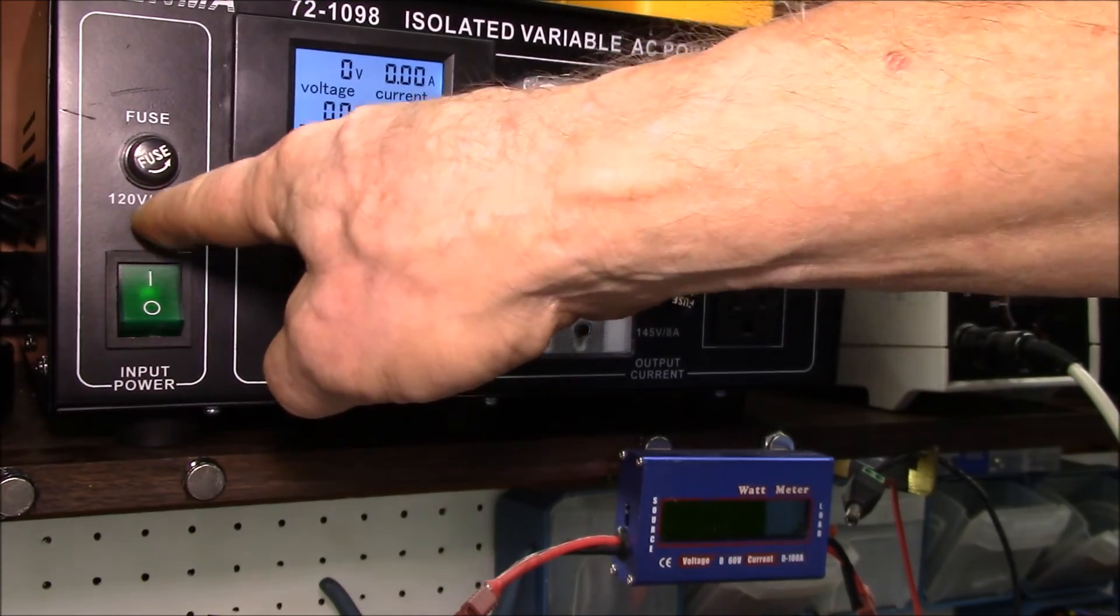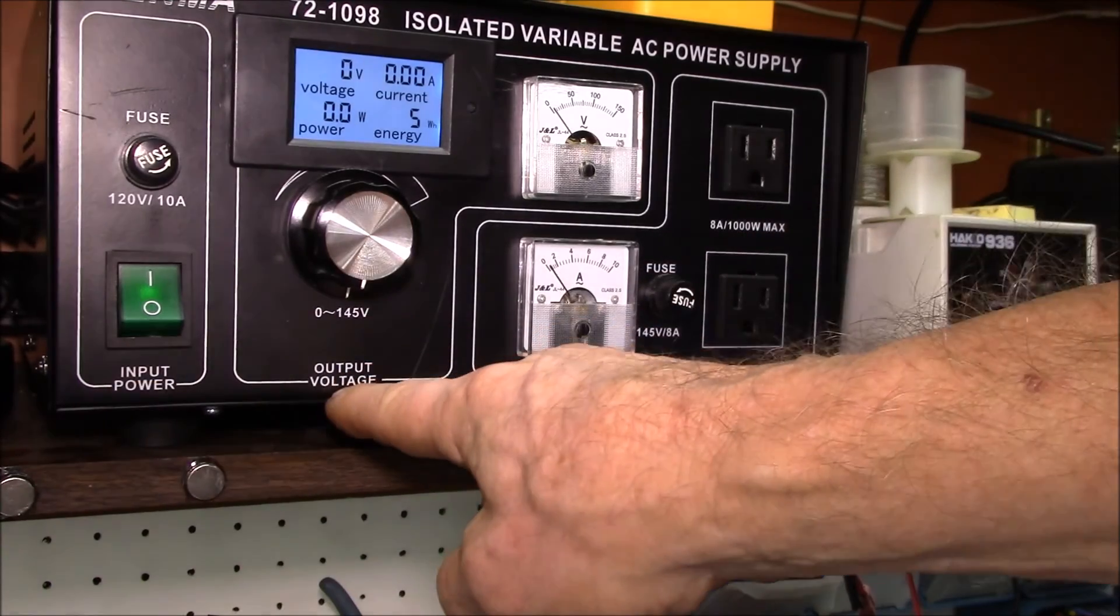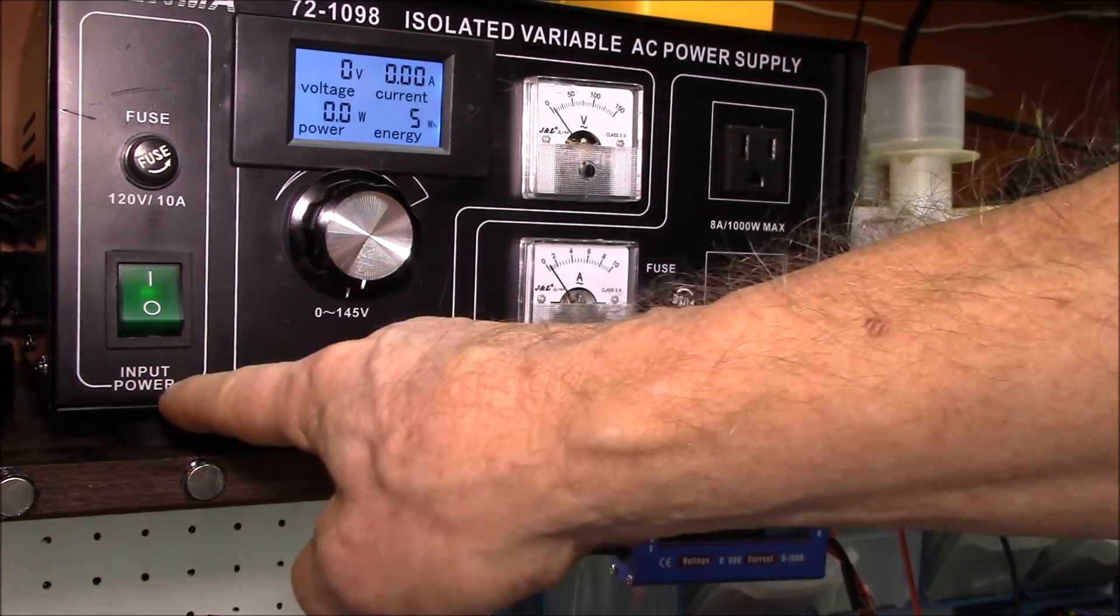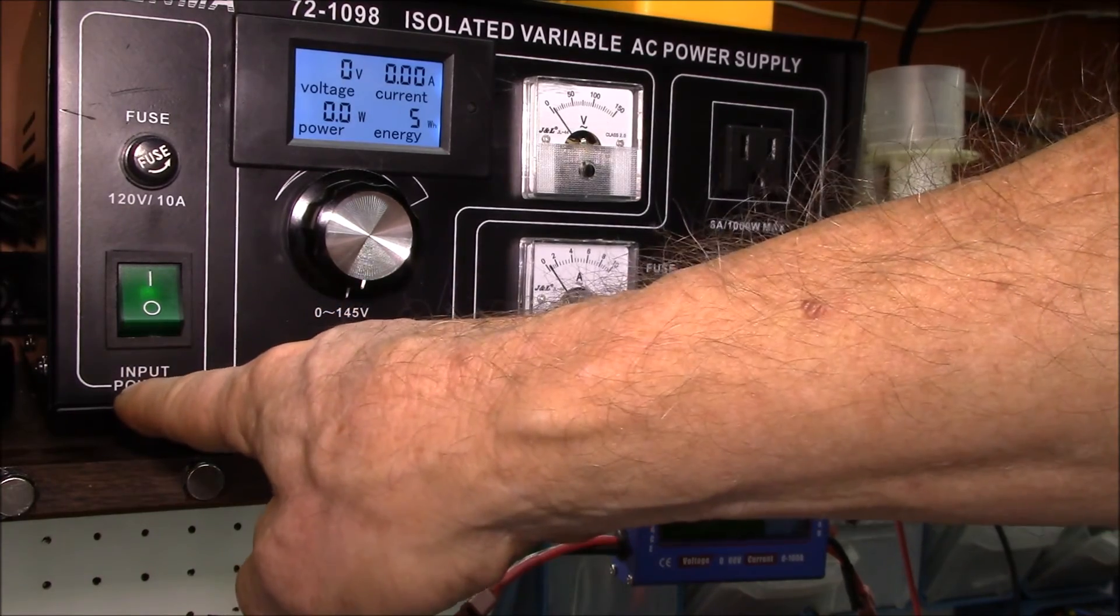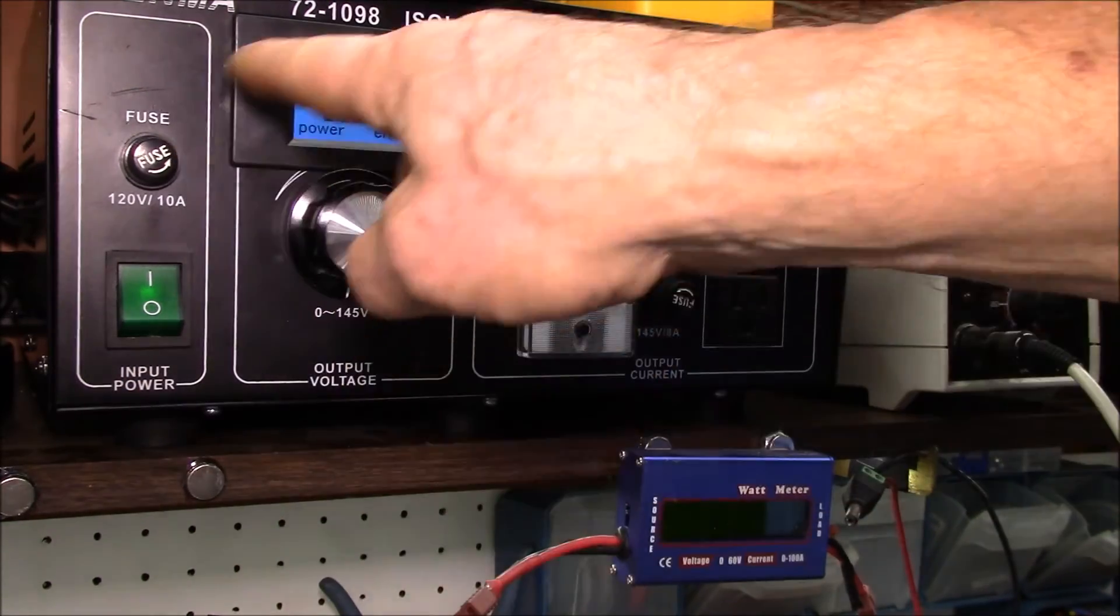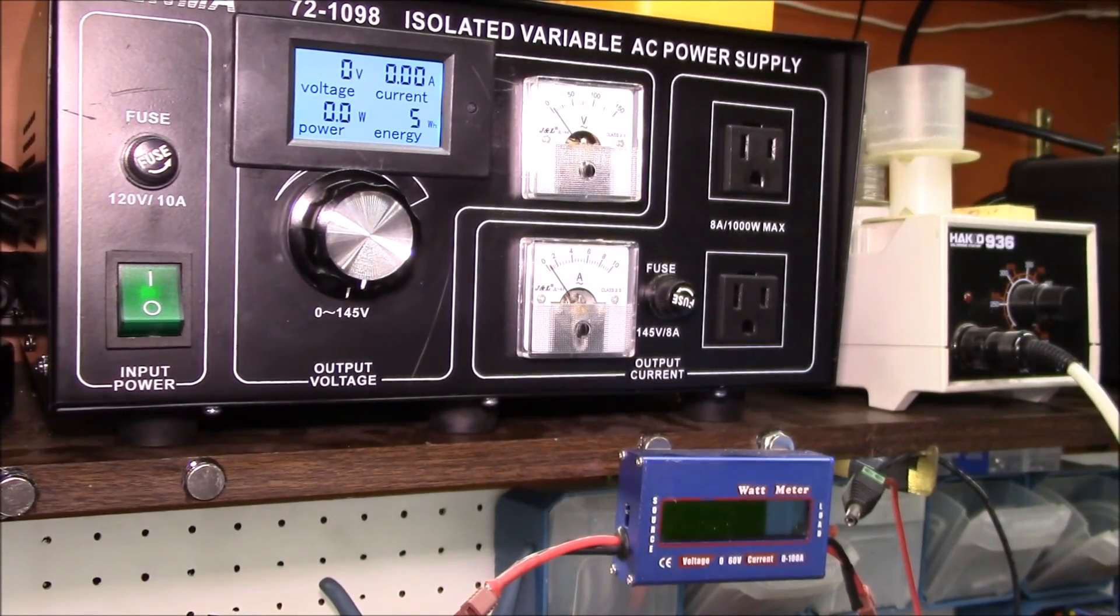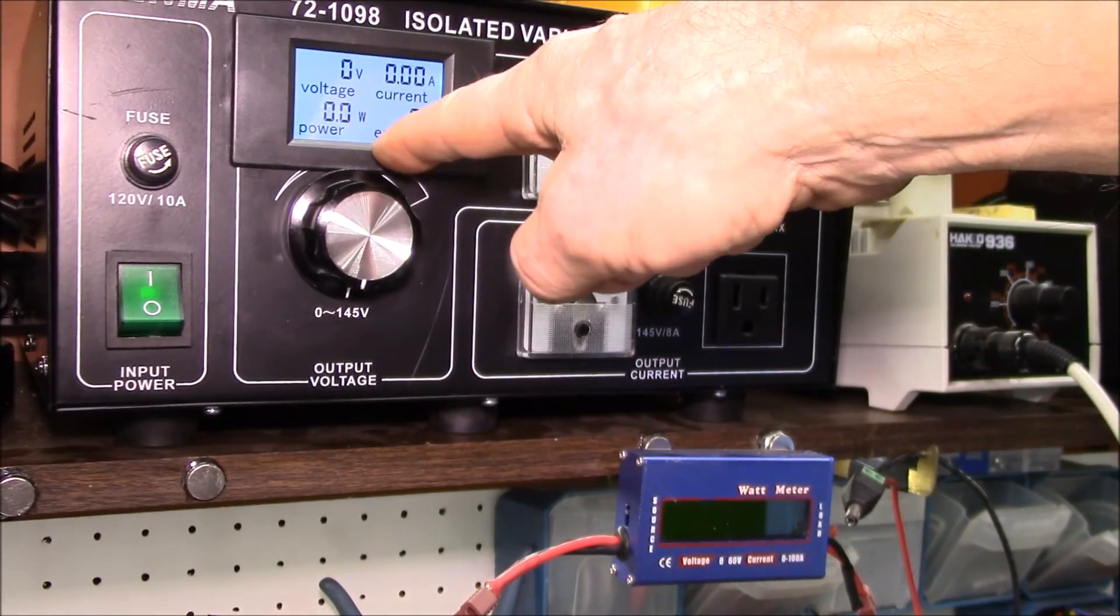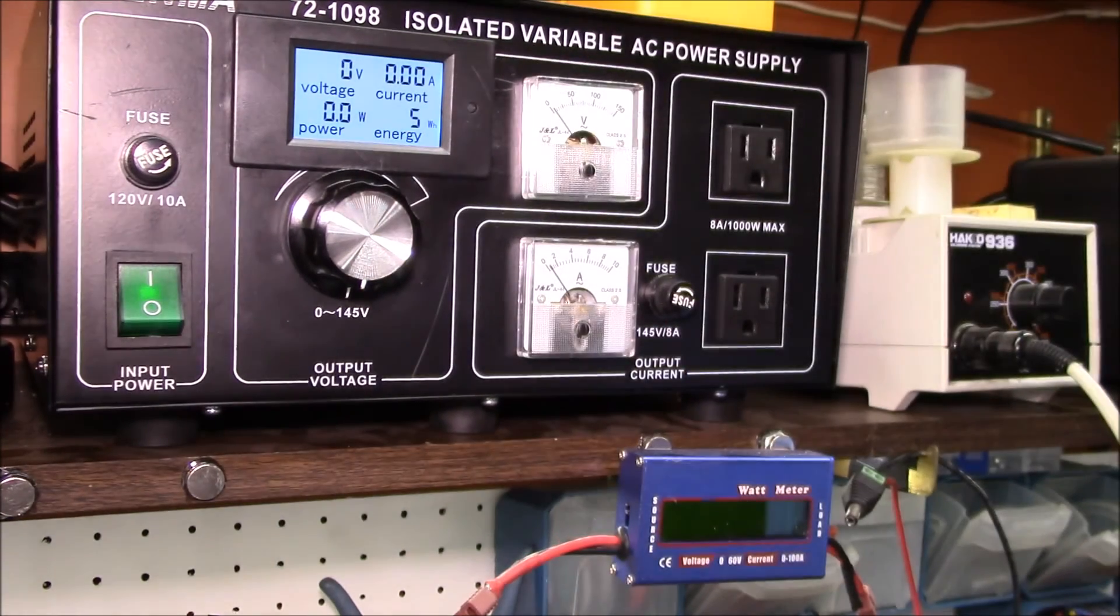If I hooked up this line over here, there's no return path for the current that would power this meter. It would be like you were just trying to use one wire to power the meter, because that neutral connection is built in there.